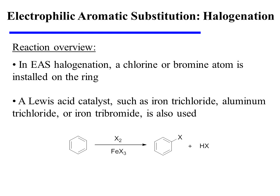In EAS halogenation, a chlorine or bromine is installed on the ring. The reaction utilizes molecular chlorine or bromine — Cl2 or Br2 — as well as a Lewis acid catalyst such as iron trichloride, aluminum trichloride, or iron tribromide.